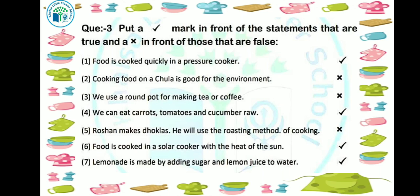Second: cooking food on a chula is good for the environment. No, this sentence is false — because a chula produces a lot of smoke, which is not at all good for the environment.